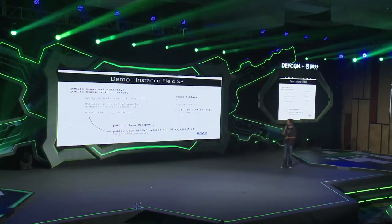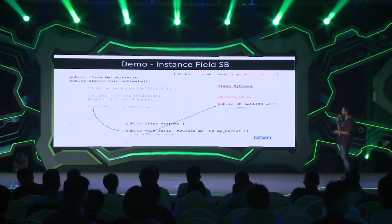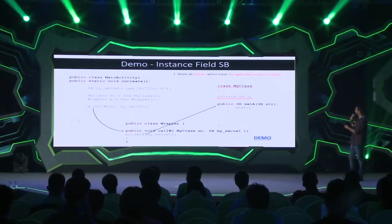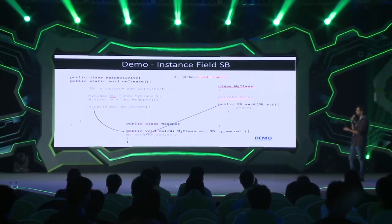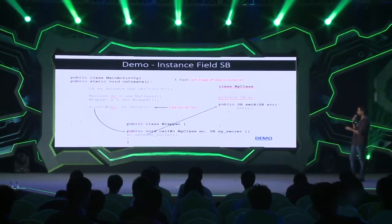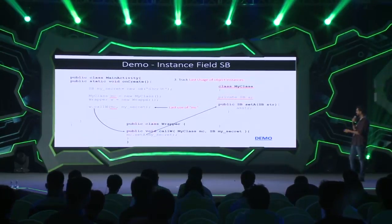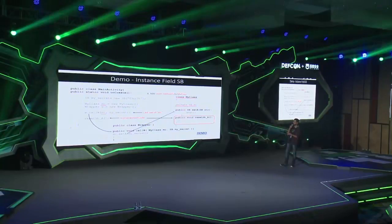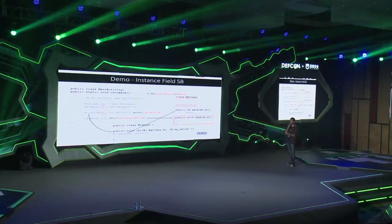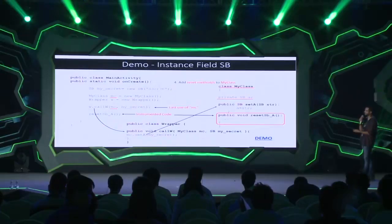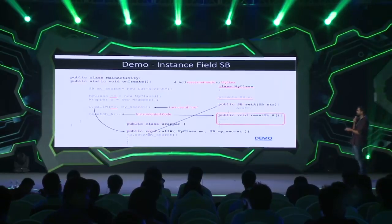Let's quickly jump to the demo. The steps are: mark all classes with StringBuilder instance fields (MyClass), find their object instances (MC), track the last uses of object instances — which is in the callW statement — then instrument the code right after callW. You can see a method resetSBA being invoked, defined in the class itself, because we cannot access the private instance field 'a' within the onCreate method.